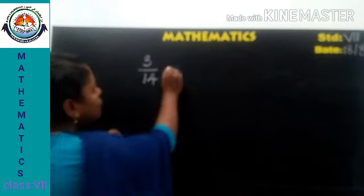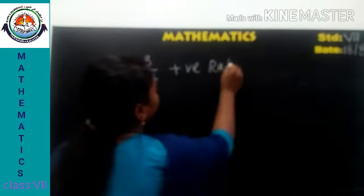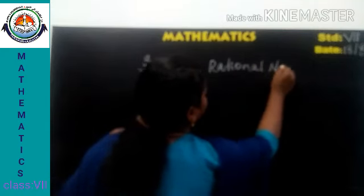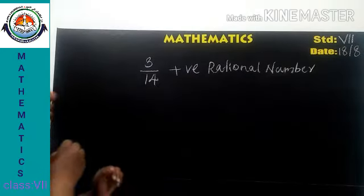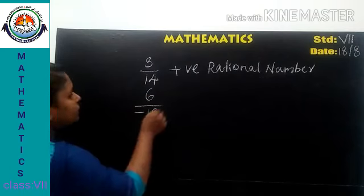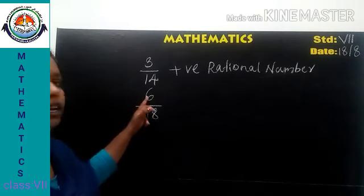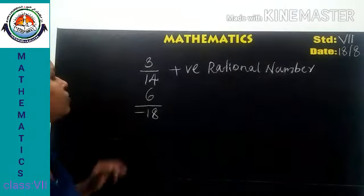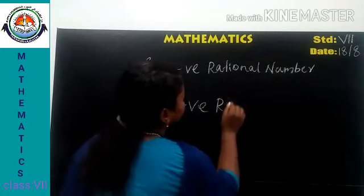Let us check some examples. The rational number 3 by 40 — is it positive or negative? It is positive, because both the numerator and denominator are positive. Another example: 6 by negative 80. Here the numerator is positive and the denominator is negative, so it is a negative rational number.